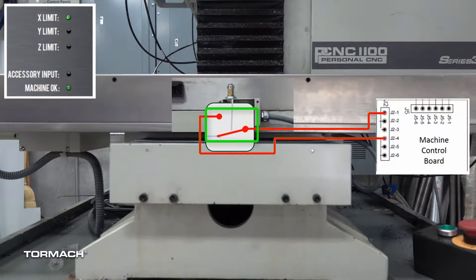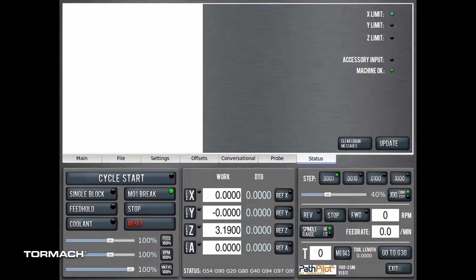When a limit switch is failed in an open condition, the machine will not reset. The PathPilot limit switch indicator will illuminate.